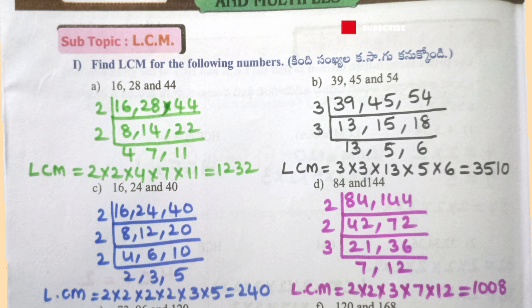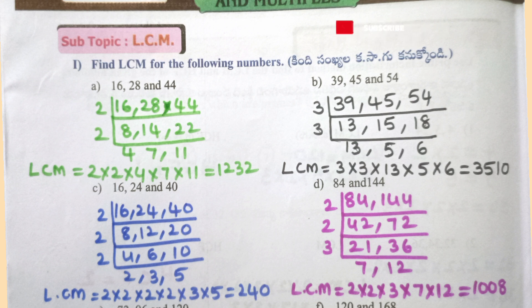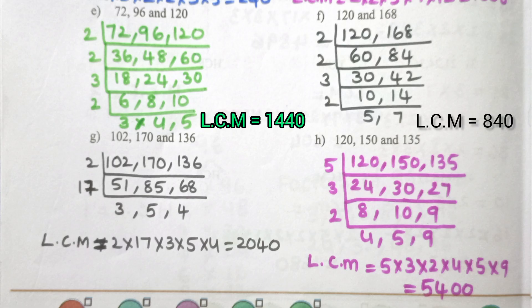C: 16, 24, 40 — LCM = 2×2×2×2×3×5 = 240. D: 84 and 144 — LCM = 2×2×3×7×12 = 1008. E: 72, 96, 120 — LCM = 1440.